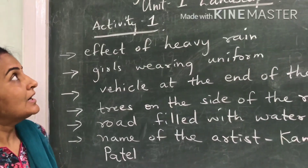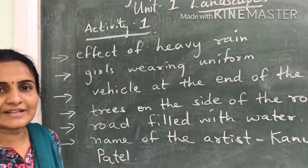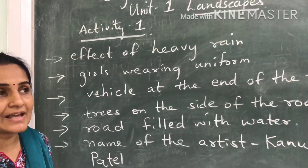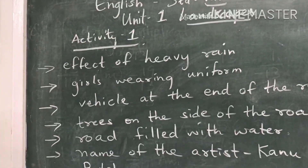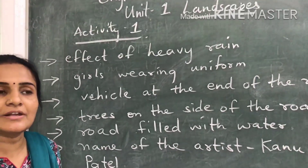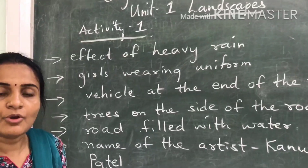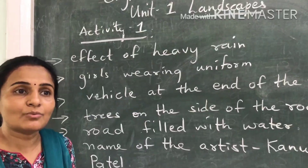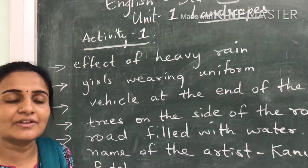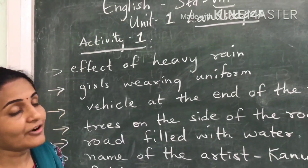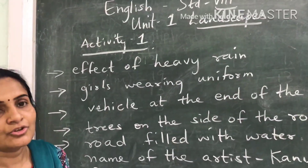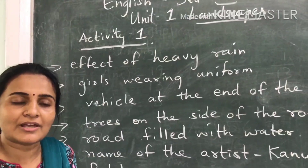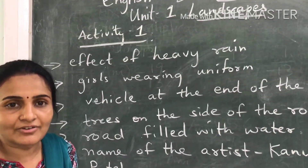Hello students, we will begin with English for standard 8. The title of your first unit is Landscapes. In this unit, they talk mainly about water, which is one of the most basic elements and something every living thing needs. The first activity talks about one aspect of water, which is heavy rain.